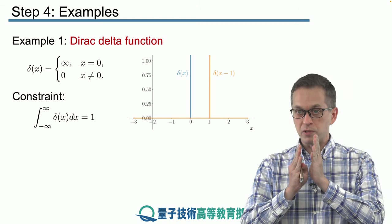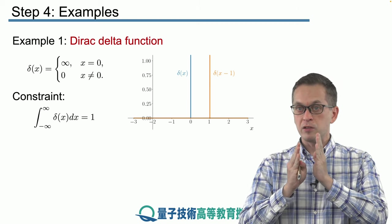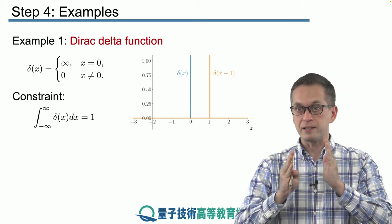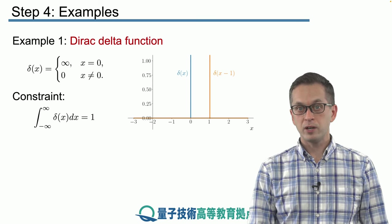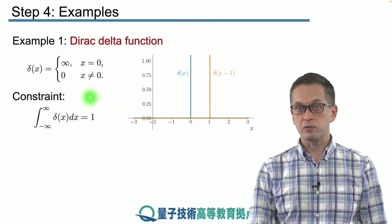Well that's because it's zero everywhere except at an infinitesimally small point, meaning that the peak that goes to infinity does not have any width. Basically it has zero width. And in that way we can satisfy this constraint.